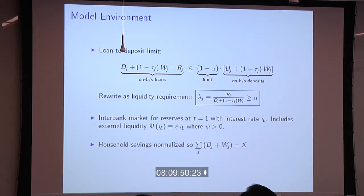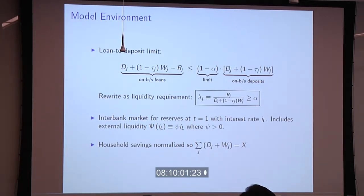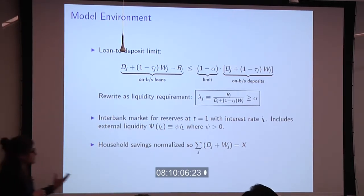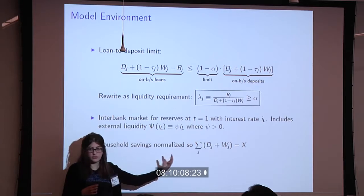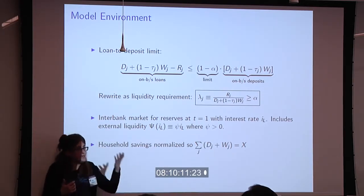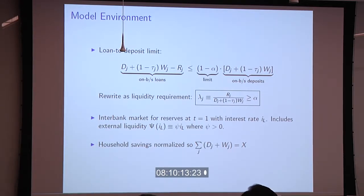There's a market where reserves get traded with an endogenously determined interbank interest rate IL. Household savings are fixed. When we think about a credit boom in our model, we're saying that the total amount of credit is increasing relative to this fixed base of savings — basically, what fraction of savings become loans either on or off balance sheet.